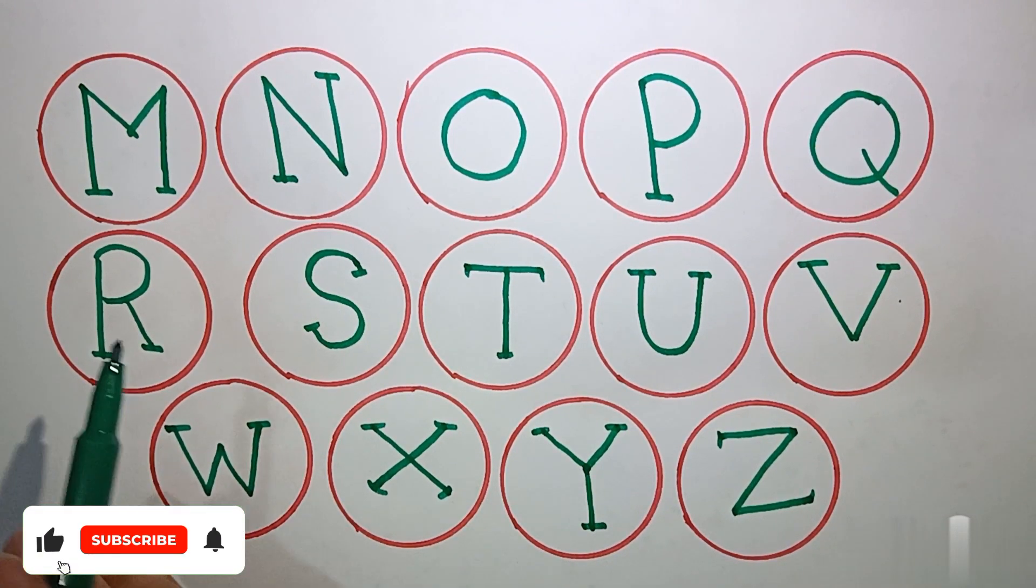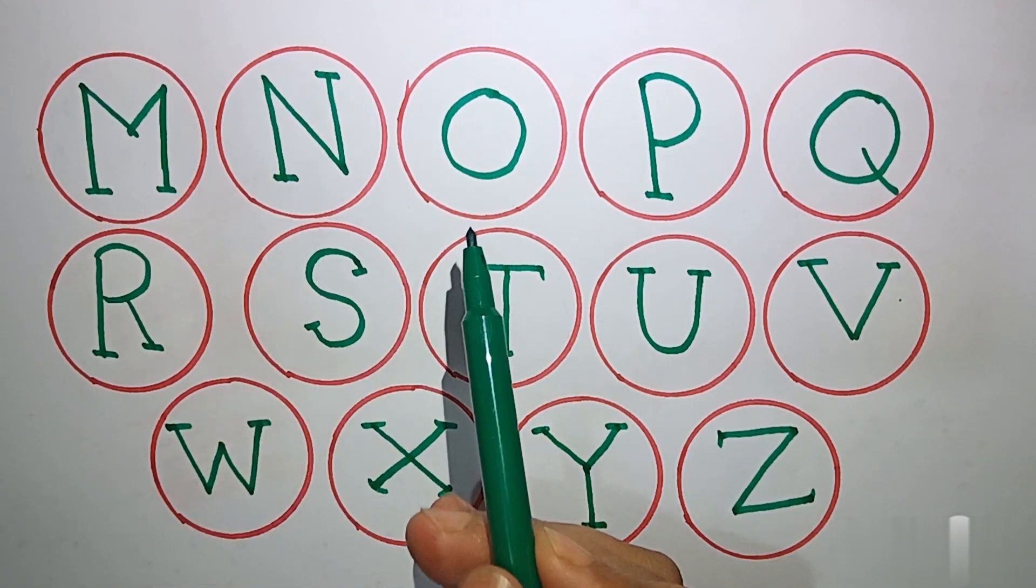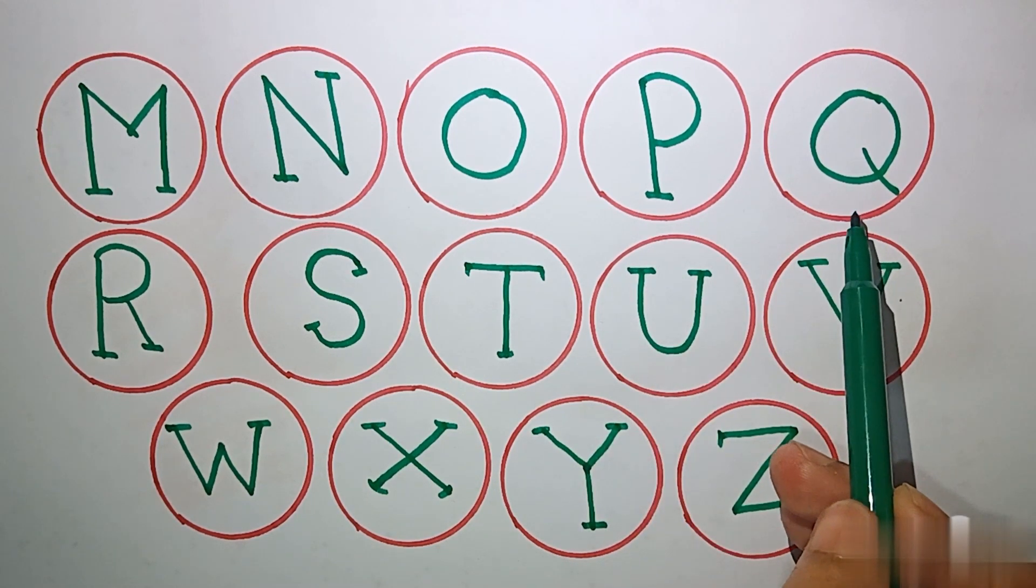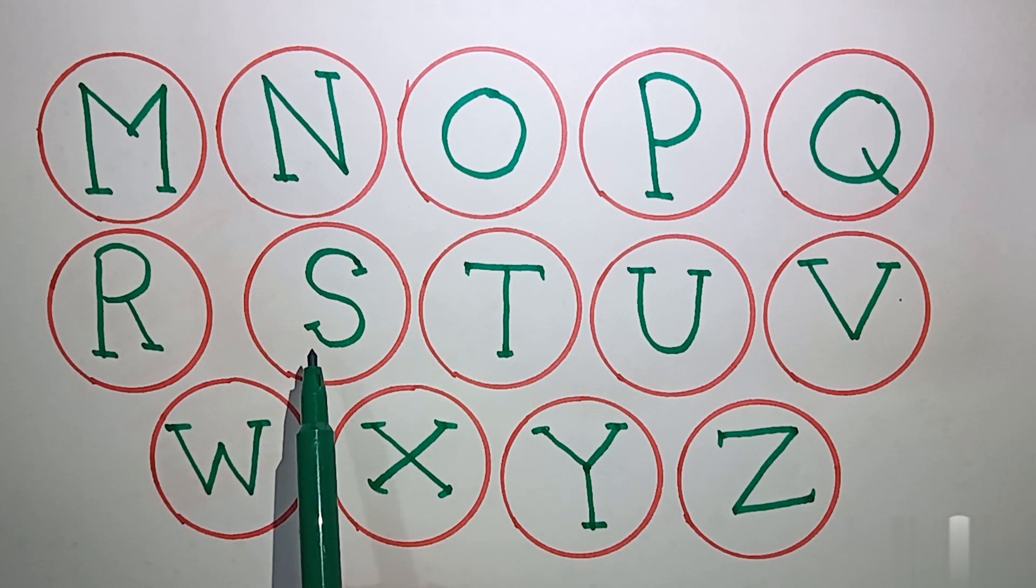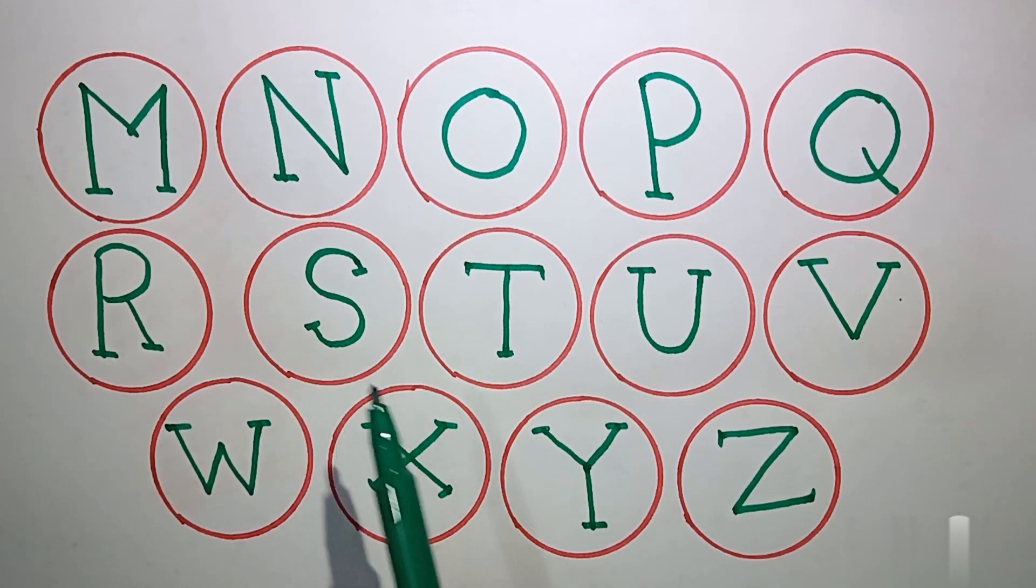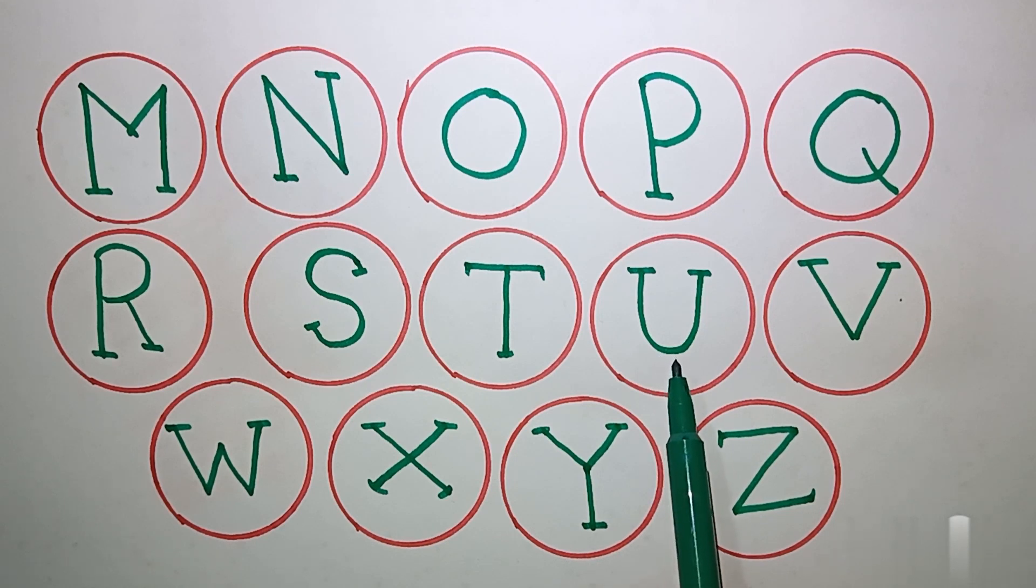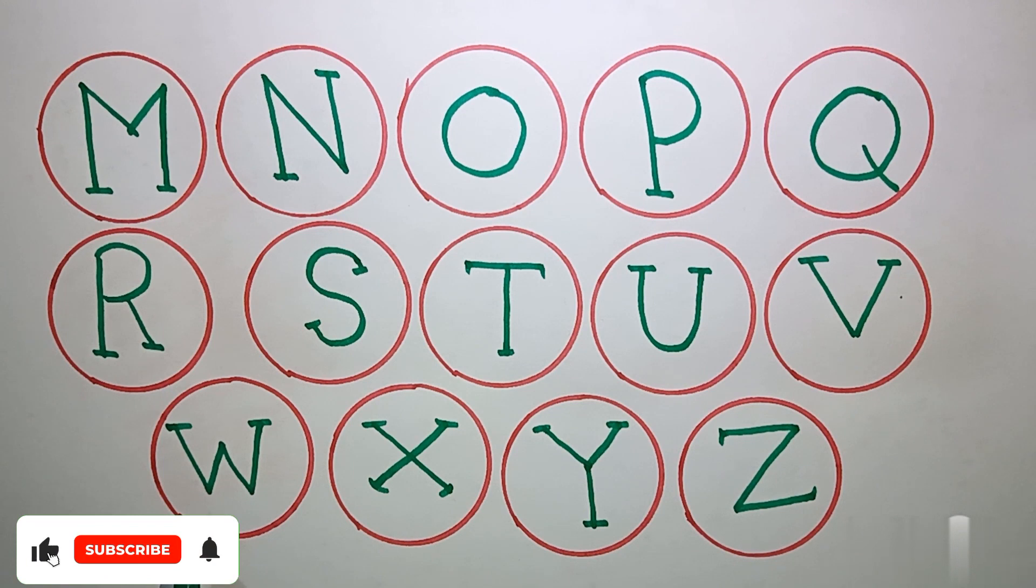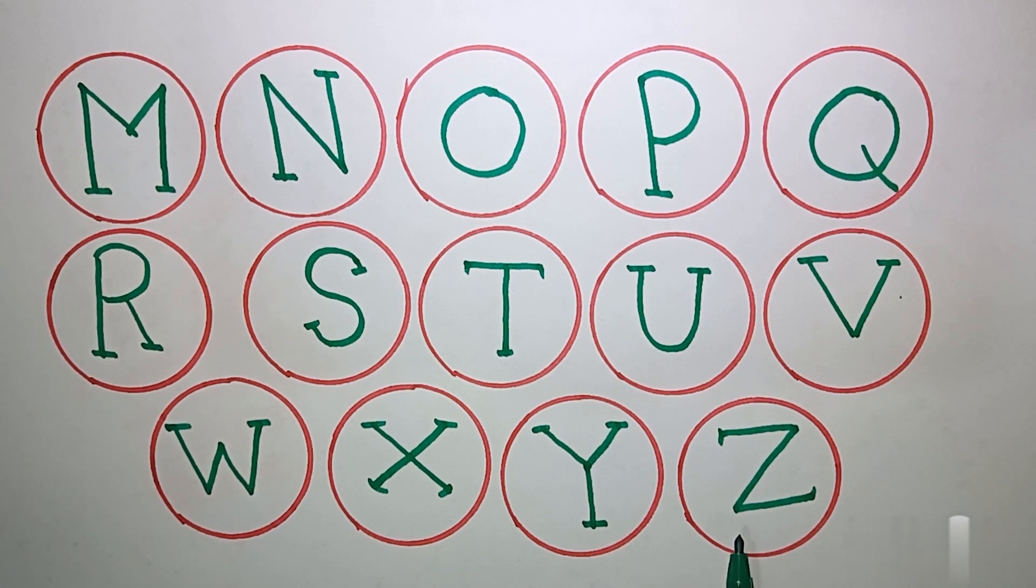M for Mango, N for Nose, O for Orange, P for Parrot, Q for Quran, R for Rose, S for Sun, T for Tiger, U for Umbrella, X for X-ray, Y for Yellow, Z for Zebra.